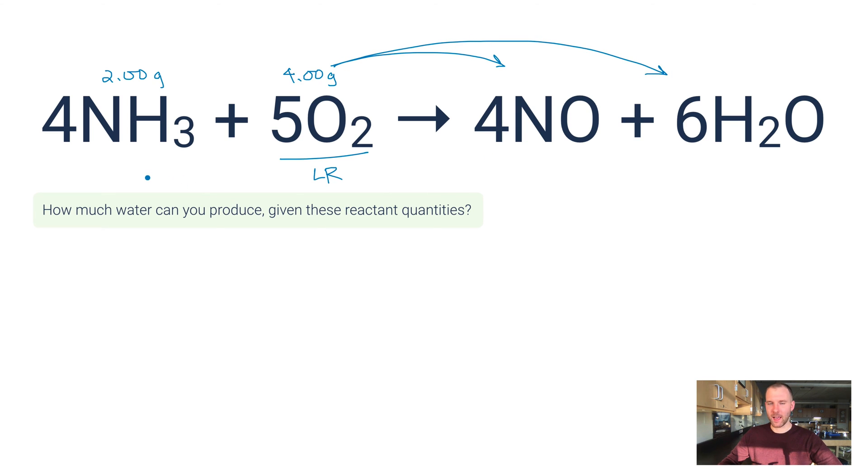Here's why. The limiting reactant is going to run out and limit how much of the products you can make. So you want to use this mass, 4 grams of O2, to calculate how much water you can make.